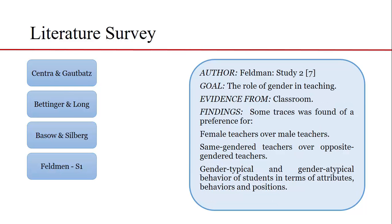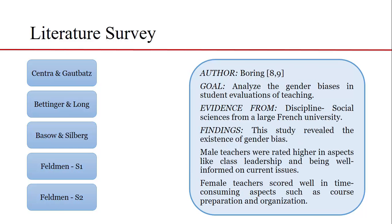In Feldman's second study from classroom data, some traces were found of preferences for female teachers over male teachers, same gender teachers over opposite gender teachers, and gender-typical as well as gender-atypical behavior. However, due to small statistical significance, Feldman considered them impractical. Boring's five successive years' data analysis revealed the existence of gender bias: male teachers were rated higher for so-called male-dominating tasks, whereas female teachers scored well in time-consuming aspects such as course preparation and organization.